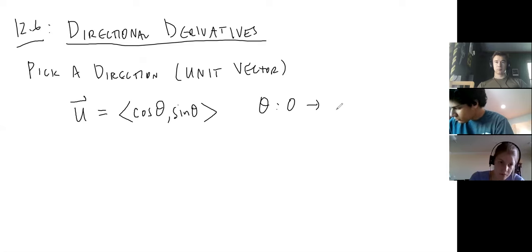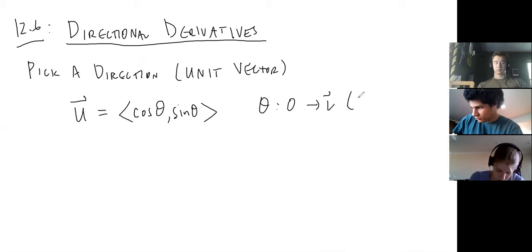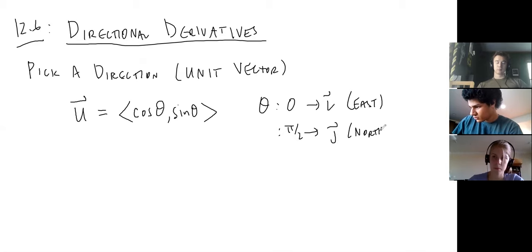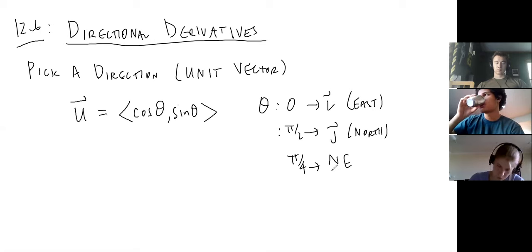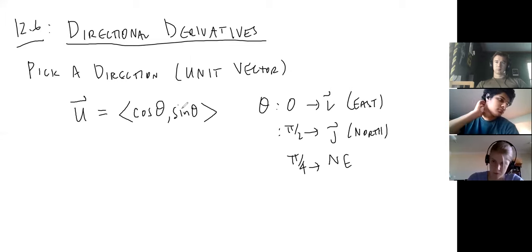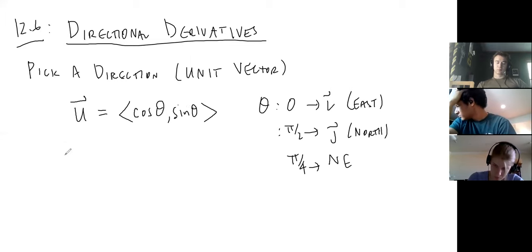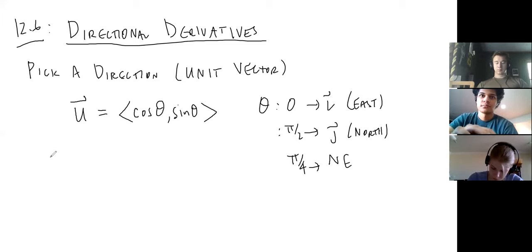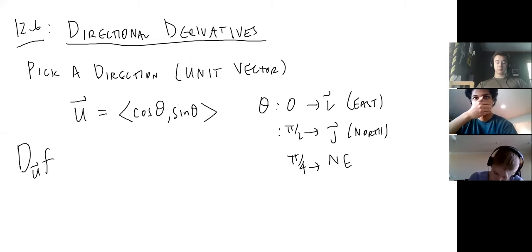If the angle is zero you get the i-hat vector — you're looking east on the map. If the angle is 90 degrees the unit vector is j-hat. If your angle is 45 degrees you'd be looking northeast, still falling on the unit circle. The idea is: if I look northeast, standing on the side of a mountain and pointing northeast, am I going up or down the mountain? You can interpolate using east and north using your function.